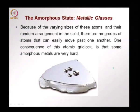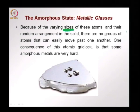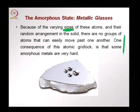Because of the varying sizes of the atoms, the random arrangement in the solid makes it very difficult for groups of atoms to move past one another. Because of this, we have what is called atomic gridlock, which imparts a lot of hardness in the amorphous material. Slipping or sliding of atoms against each other along planes is very difficult — something we discussed when we looked at alloys or point defects.